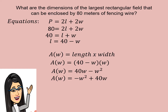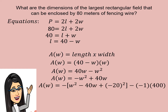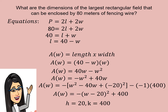Let us apply the process of completing the square by taking one-half of 40, which is 20, and squaring it to get 400. We subtract negative 1 — our value of A — times 400 to balance the equation. Now let us write the vertex form: A(W) is equal to negative (W minus 20) squared plus 400. So we can easily identify H is equal to 20 and K is equal to 400.